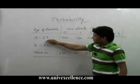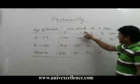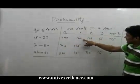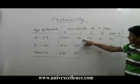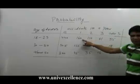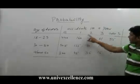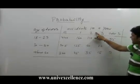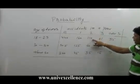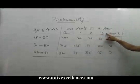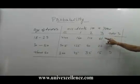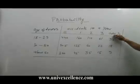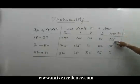Age of drivers is 18 to 29. Then exactly 1 accident, frequency of exactly 1 accident is 160. Frequency of exactly 2 accidents is 110. Frequency of exactly 3 accidents is 61. And frequency of accidents more than 3 is 35.